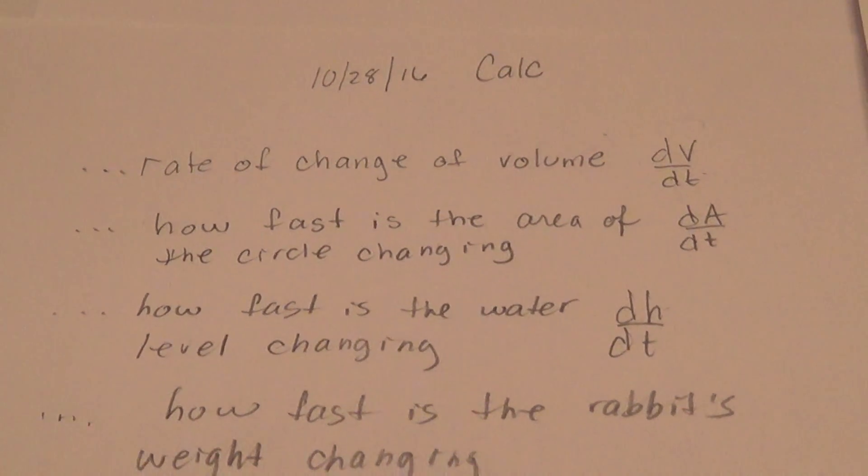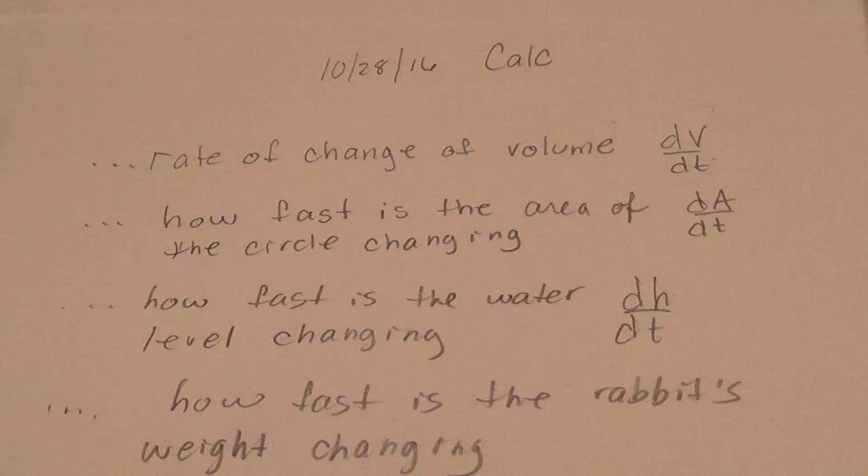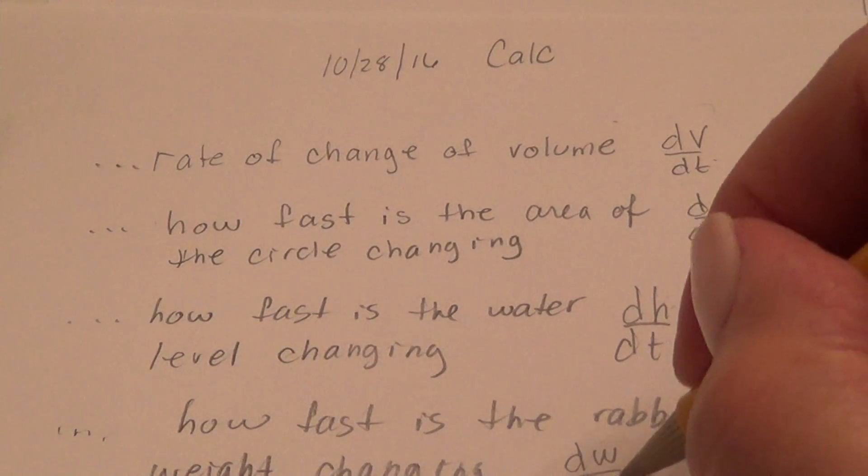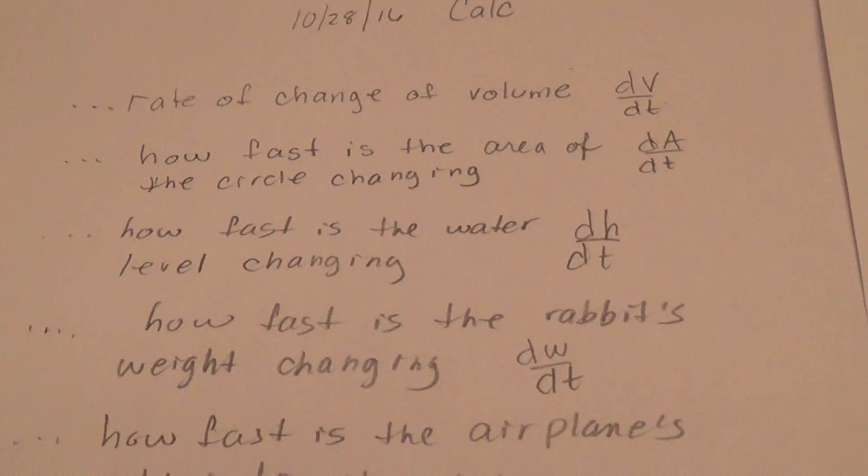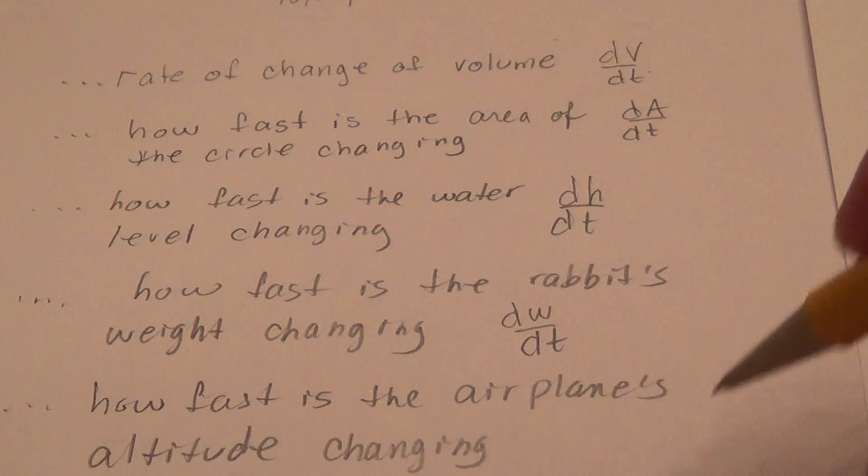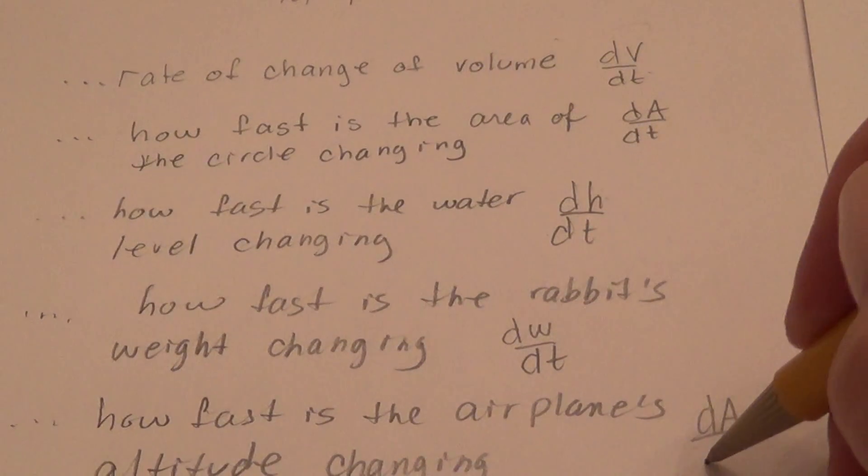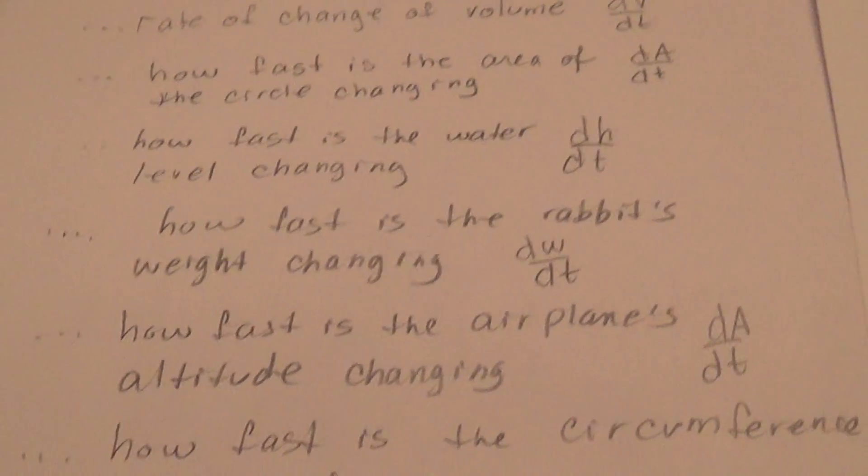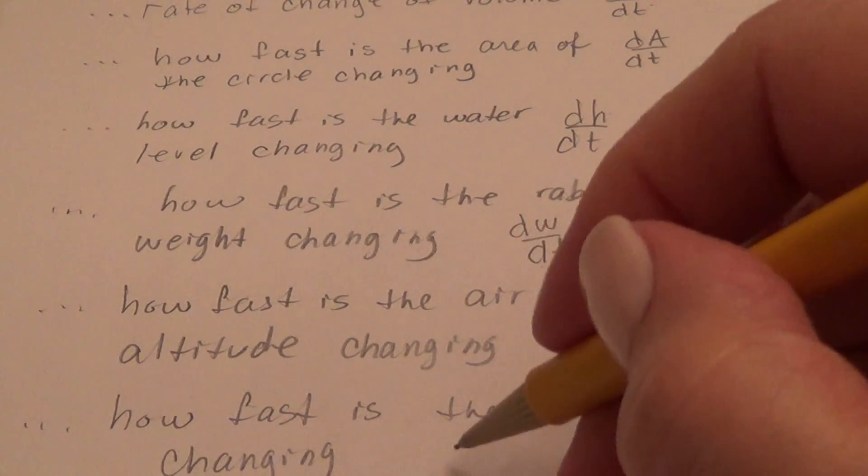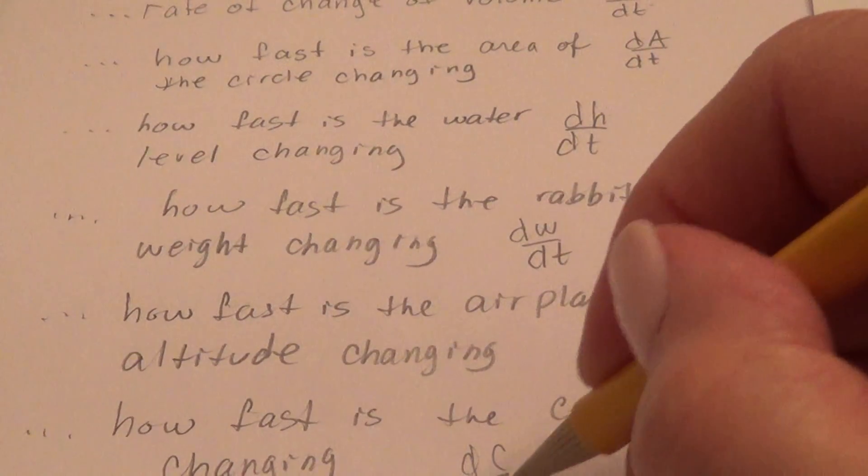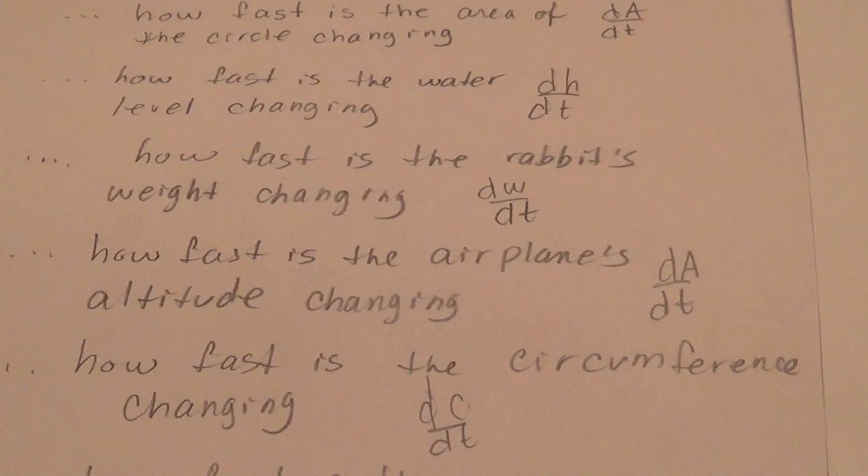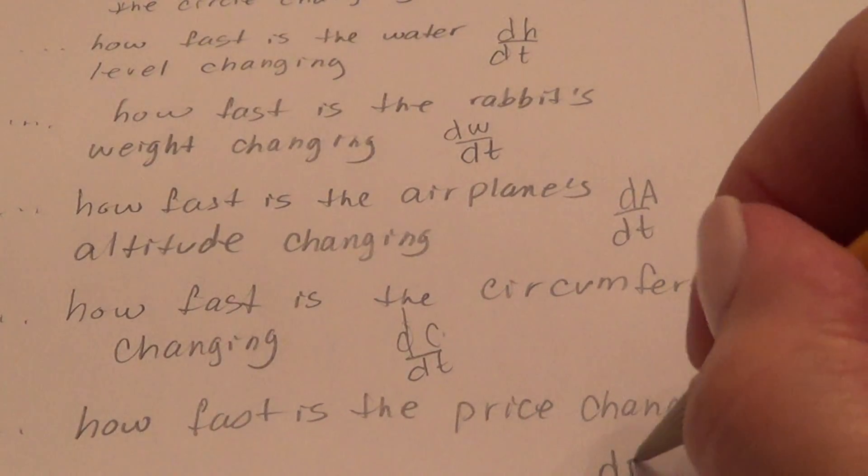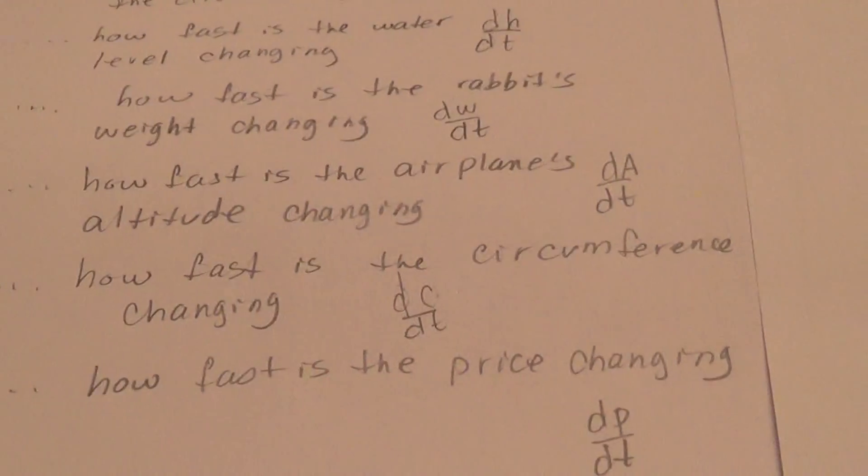See if you can name this one. How fast is the rabbit's weight changing? We can say dw/dt, the change in weight with respect to time. And you could use any variable there. How fast is the airplane's altitude changing? We could use dA/dt. In this problem, it would represent altitude. How fast is the circumference changing? dc/dt, the change in circumference with respect to time. And how fast is the price changing? That's talking about dp/dt.